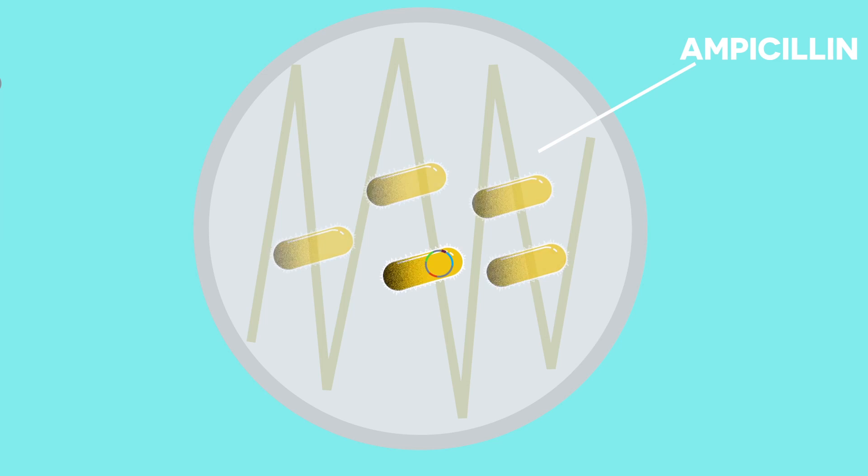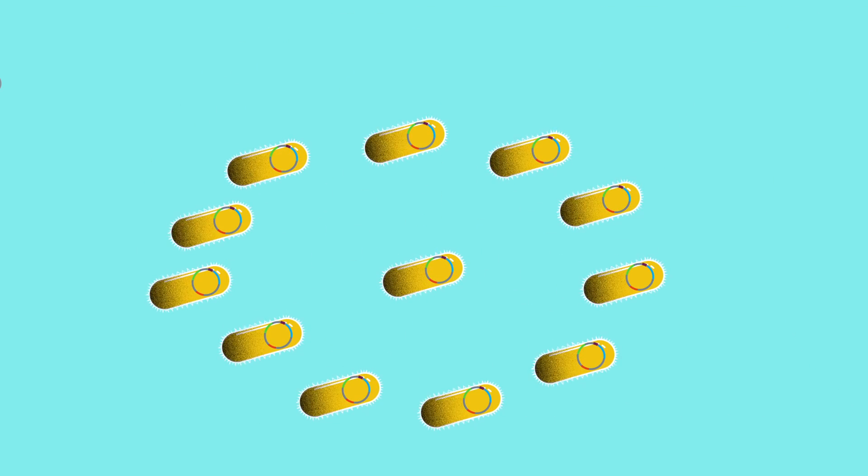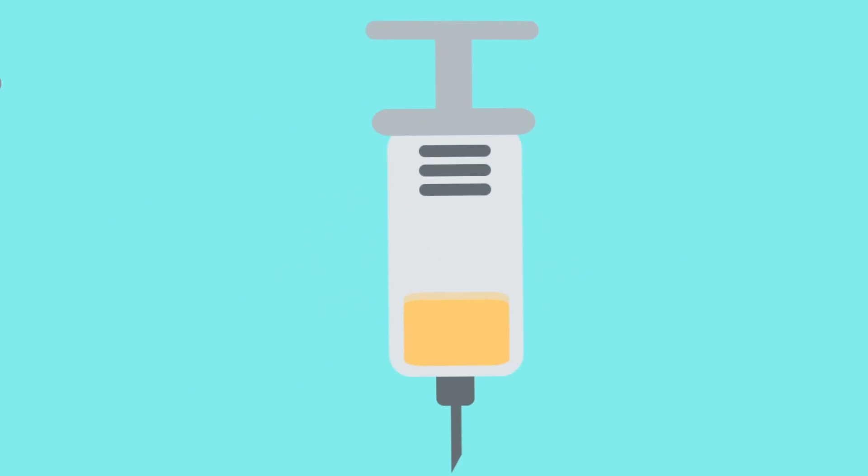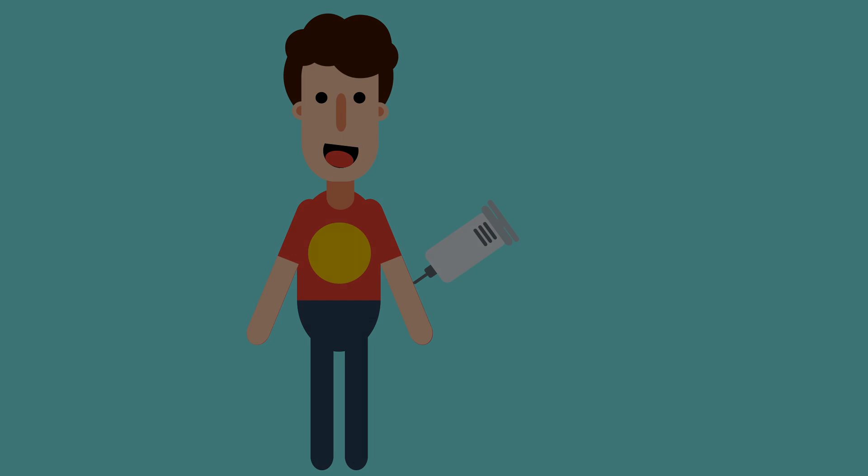Once we have the bacterium with the plasmid, we can replicate it, and those bacteria can make the clotting factors since they all have the Factor 7 gene in their plasmid. After they make the clotting factors, we extract them and mix them with sterile water so they can be injected. Now we can give the injection to Bob, and he'll feel much better. Maybe, just maybe, he could chase his soccer dreams after all.